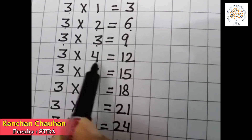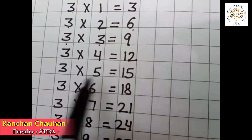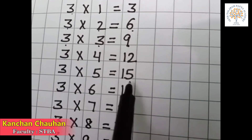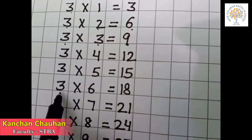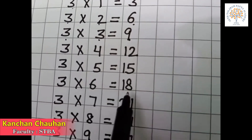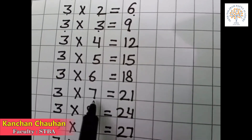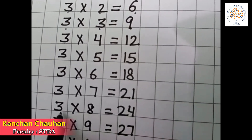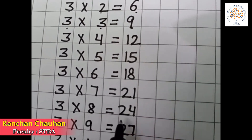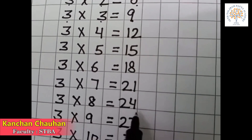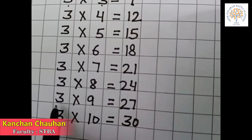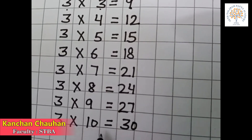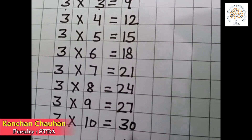3 4s are 12, 3 5s are 15, 3 6s are 18, 3 7s are 21, 3 8s are 24, 3 9s are 27, 3 10s are 30.